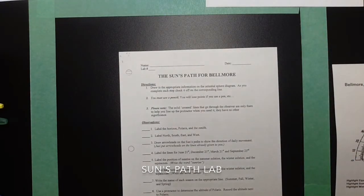Now, flipping back to our first page, let's go through the directions. Draw the appropriate information on the celestial sphere diagram. As you complete each step, check it off on the corresponding line. You must use a pencil. You will lose a point if you use pen. Please note the solid cross lines that go through the observer are only there to help you line up the protractor when you need it. They have no other significance.